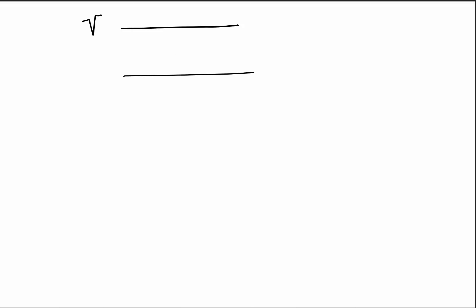To keep the problem simple, we are going to take our favorite parallel plate capacitor. Let us say this is the parallel plate capacitor with its top plate at potential V and the bottom plate grounded. We assume that between the plates there are two kinds of dielectric. The first dielectric has properties ε₁ and σ₁, and the second dielectric has properties σ₂ and ε₂. The width of the first is d₁, the second is d₂, and the area of the plate as well as the dielectric is S.